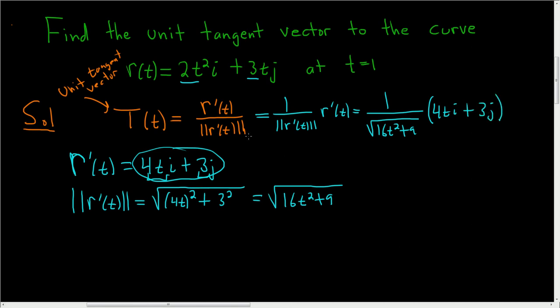That's T(t). Let me write it clearly: T(t) equals 1 over the square root of 16t² plus 9, times (4ti plus 3j).